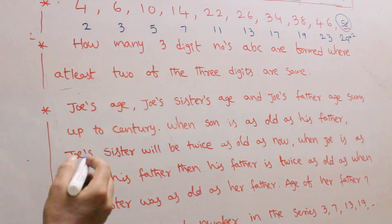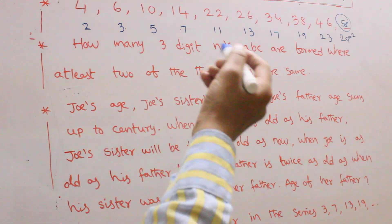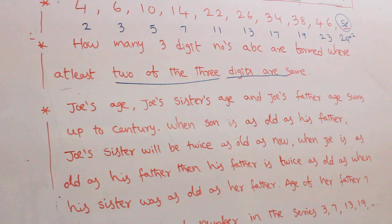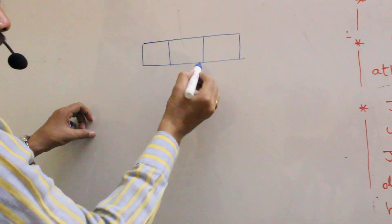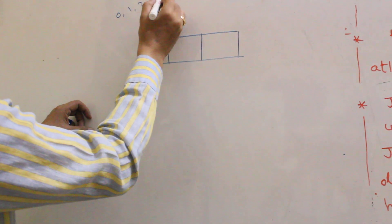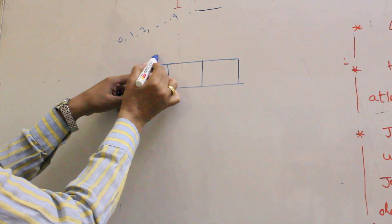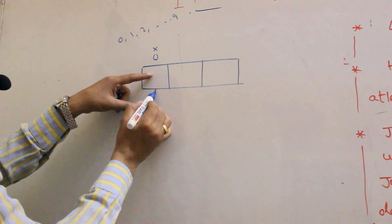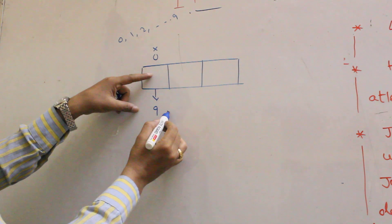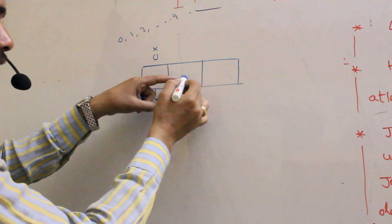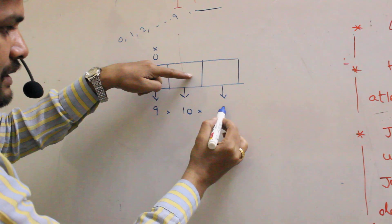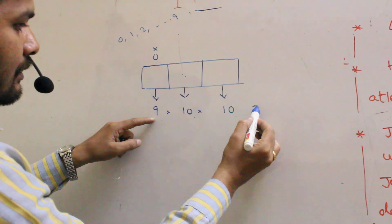Coming to the next question: how many 3-digit numbers ABC are there where at least 2 of the 3 digits are the same? First of all, for 3-digit numbers, the digits range from 0 to 9. But 0 cannot be written in the first place, because then the number would be considered a 2-digit number. So how many chances are there for the first digit? 9 chances. For the next digit, 10 chances, and the next, 10. So 9 into 10 into 10 equals 900. These are the cases where repetitions are allowed.